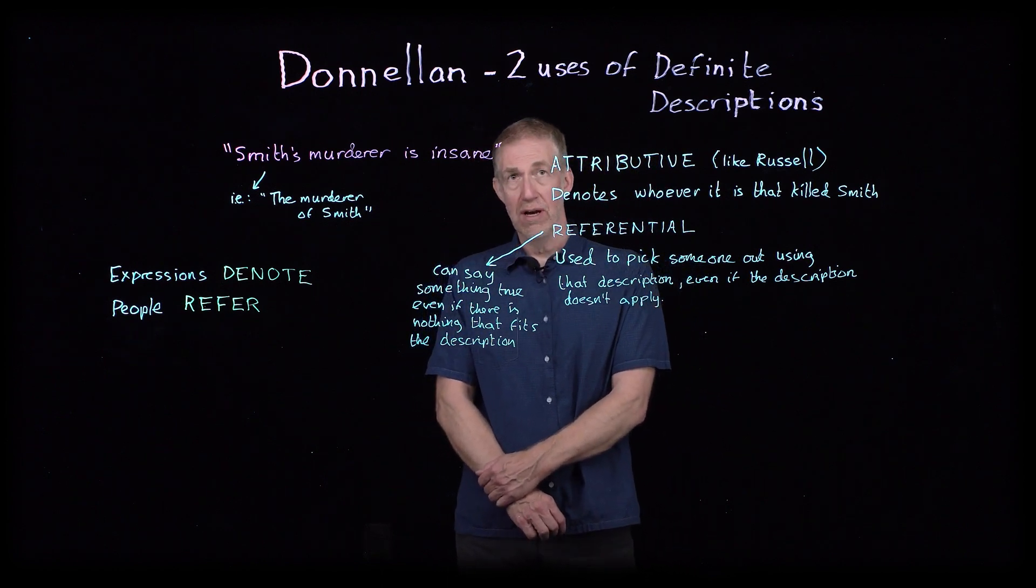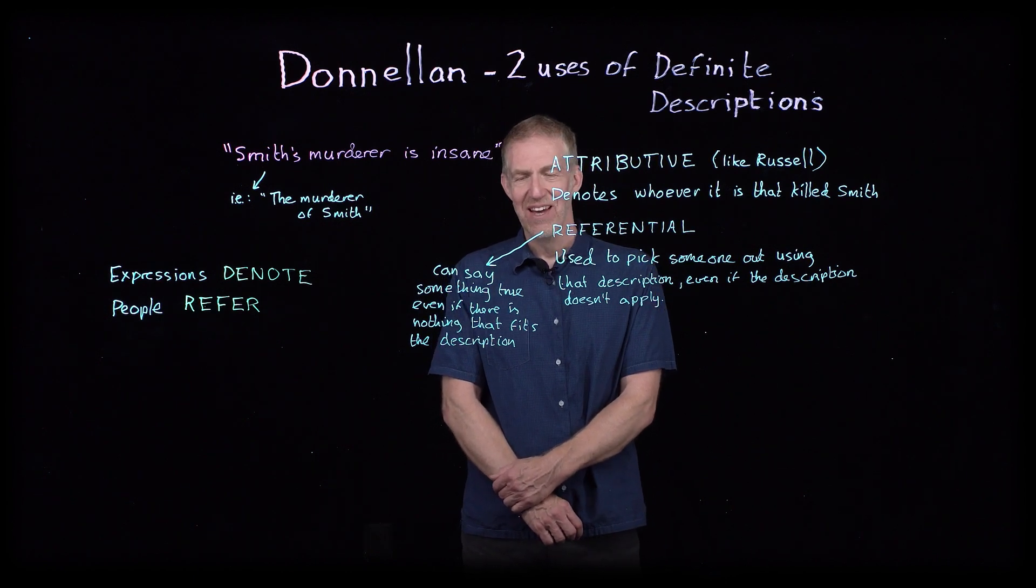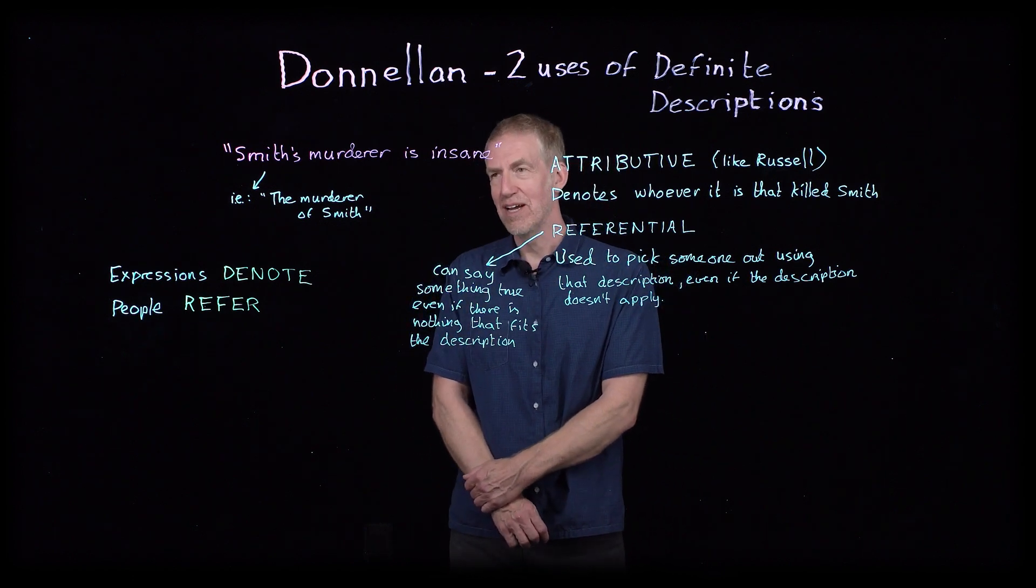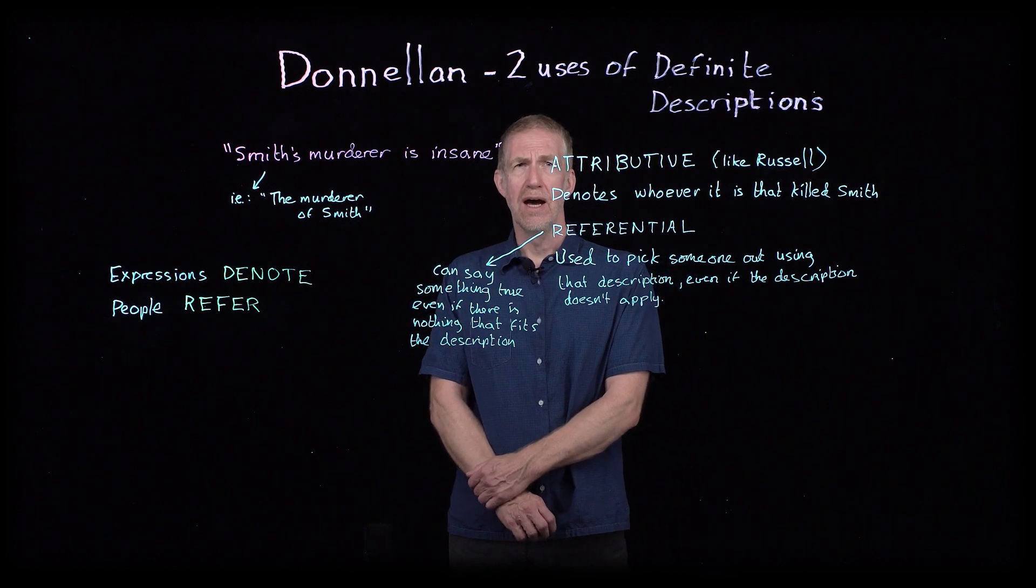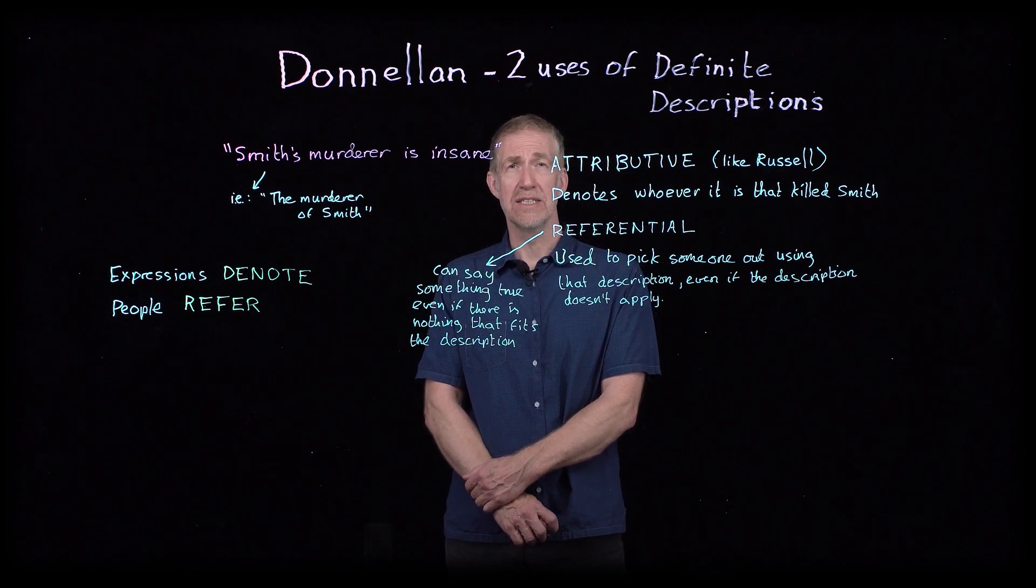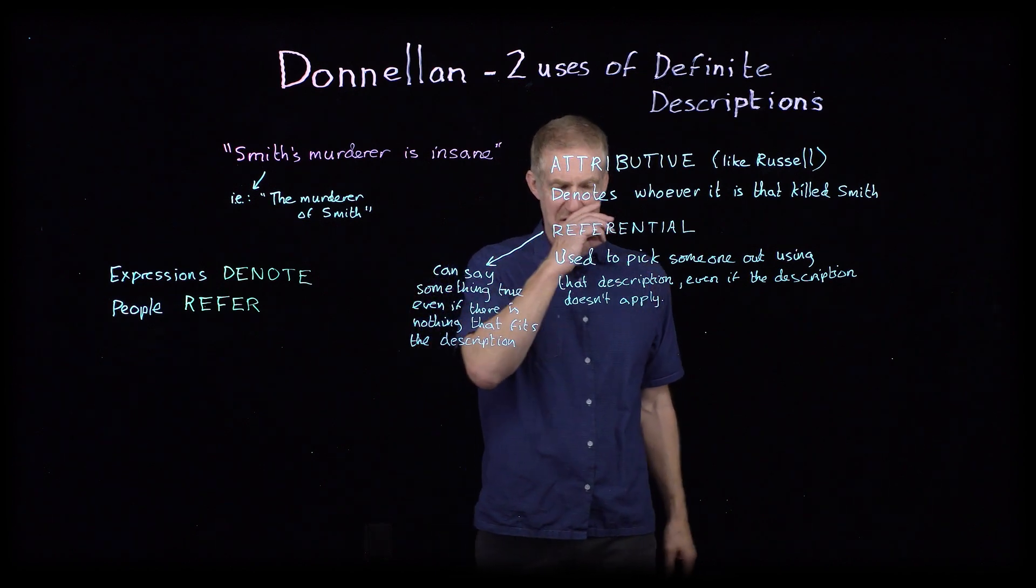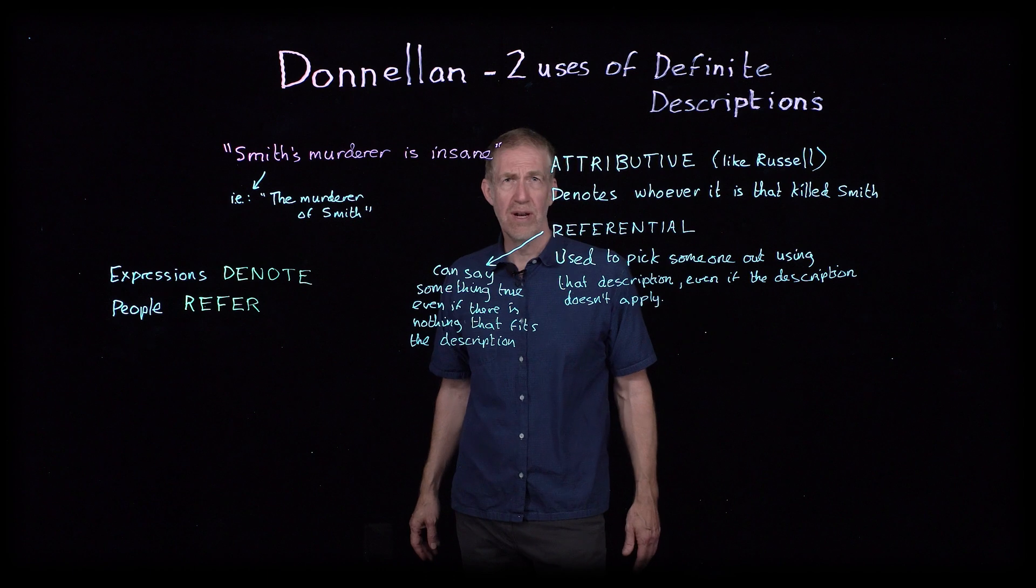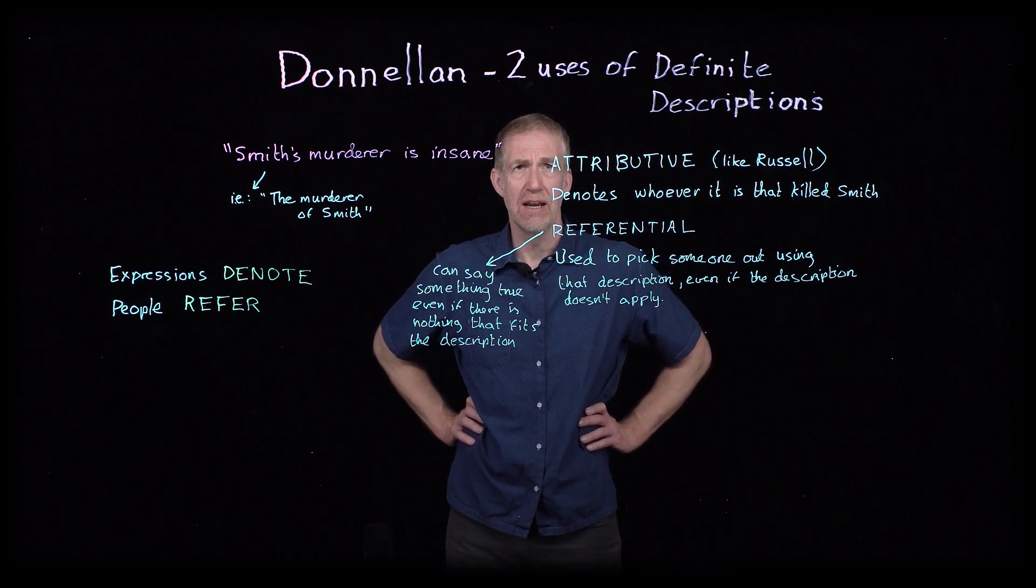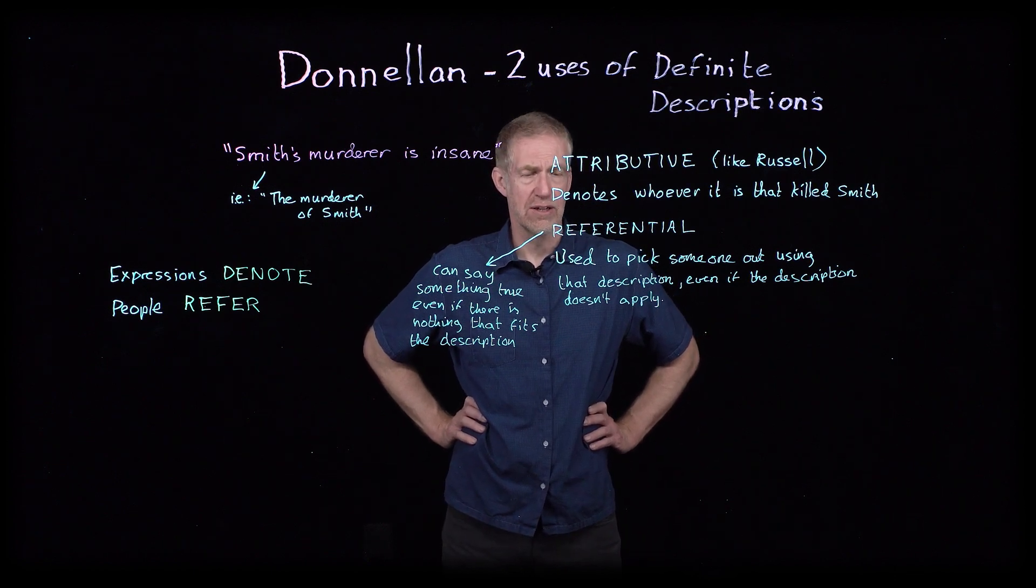Strawson wrote an article criticizing Russell that Russell did not take kindly to. Maybe that's because Strawson was at Oxford and Russell was at Cambridge. Strawson's article is called On Referring, and Russell's article is called On Denoting, and the distinction is important. We're not going to look at Strawson's article, although you can get a fair idea of it from reading Donnellan's article.